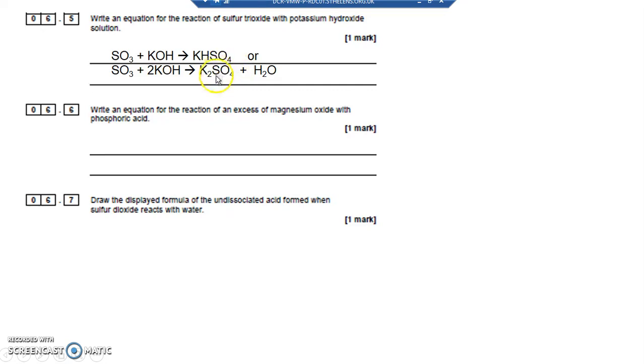You could probably work that out - sulfur is in group 6, oxidation state plus 6. Oxygen is 4 times minus 2 because oxygen is in group 6 with a minus 2 oxidation state. So you need 2 plus 1s to balance out the two minuses of the SO4 2- ion - 2 KOH and some water as well. But the top equation is easier to balance.